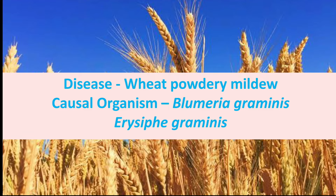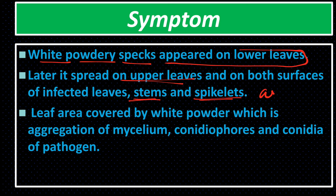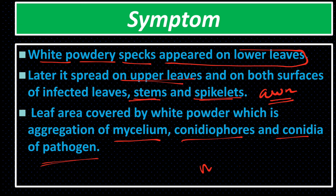Symptoms: White powdery specks appear on the lower leaves, later spreading to upper leaves, stems, spikelets, and awns. The leaf area is covered by white powder — an aggregation of mycelium, conidiophores and conidia of the pathogen. Later the pathogen causes necrosis in leaves, leading to early defoliation.